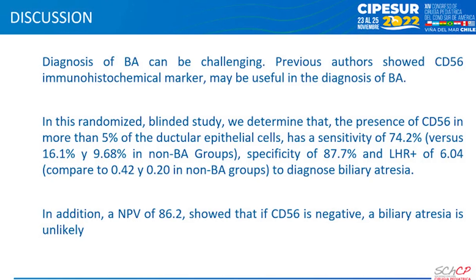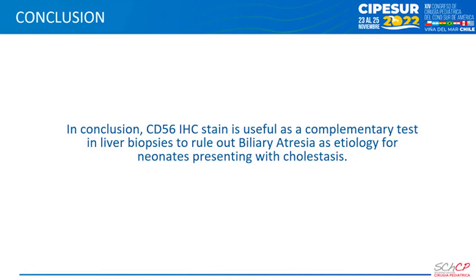Diagnosis of biliary atresia can be challenging. Previous authors show that the CD56 immunohistochemical marker might be helpful for the diagnosis of biliary atresia. In this randomized blinded study, we determined that the presence of CD56 in more than 5% of the ductal epithelial cells has a sensitivity of 74.2% versus 16.1% and 9.68% in non-BA groups, specificity of 87.7%, and LHR positive of 6.04 compared to 0.42 and 0.20 in non-BA groups. In addition, an NPV of 86.2% shows that if CD56 is negative, biliary atresia is unlikely. In conclusion, CD56 IHC staining is helpful as a complementary test in liver biopsies to rule out biliary atresia as an etiology for neonates presenting with cholestasis. Thank you all.